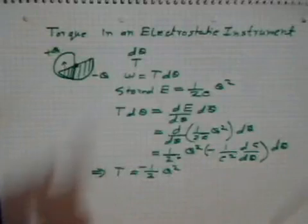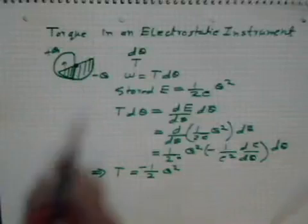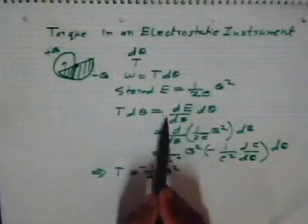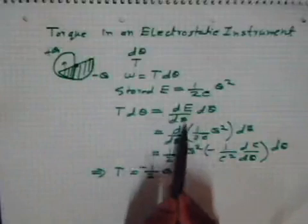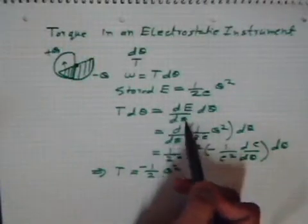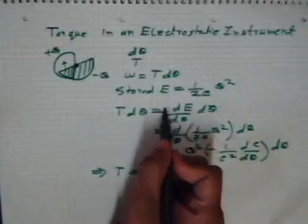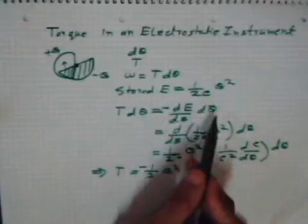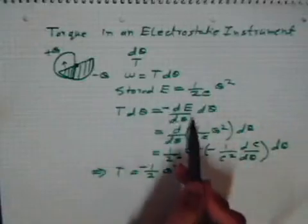I have made a mistake. This is the work done and this is the increase in energy. dE/dθ is the rate of increment, so I should put a minus here, then it will be the decrease of energy.